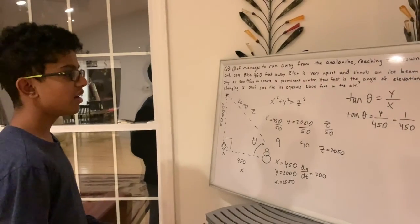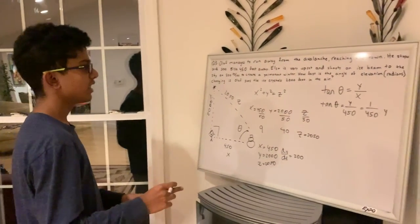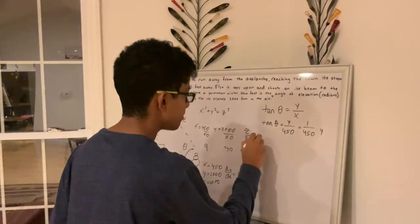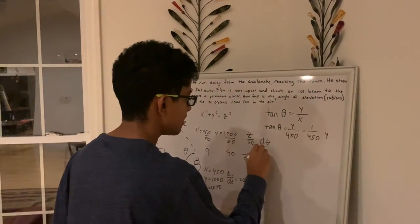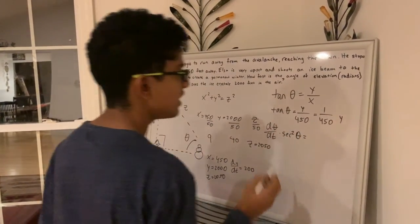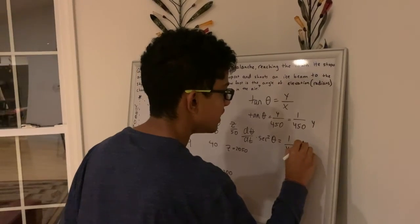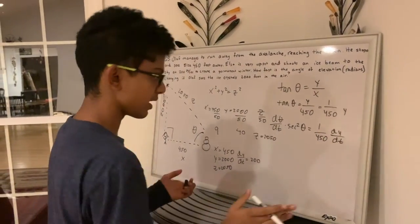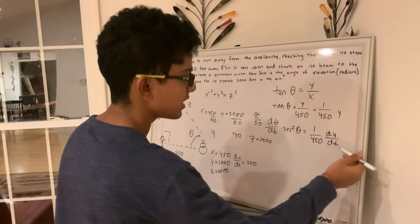So the derivative here, d theta dt times secant squared theta equals 1 over 450 dy over dt. So here tan's derivative is secant squared, y's derivative is dy dt.